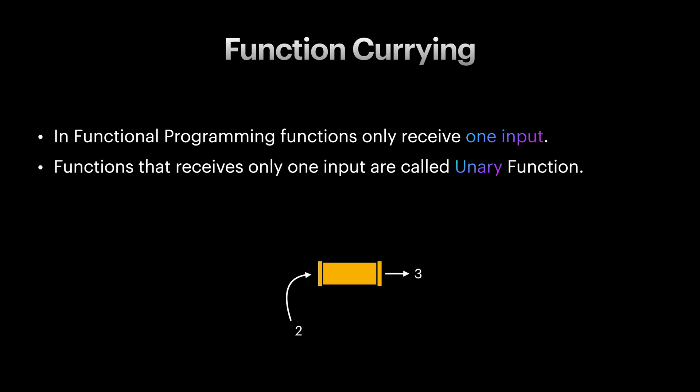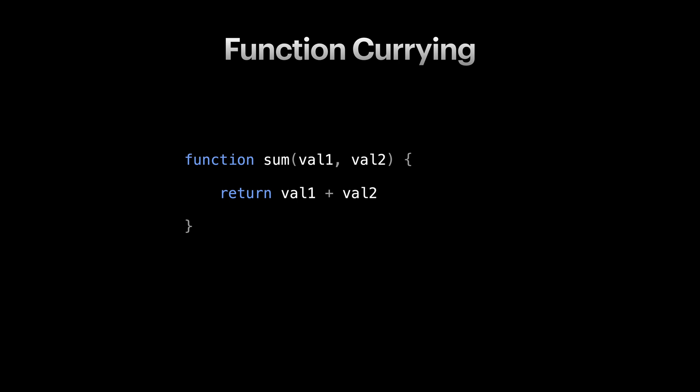Let's see how we can model our multi-parameter functions with unary functions by an example. Here we have a sum function. Let's make this more functionally.